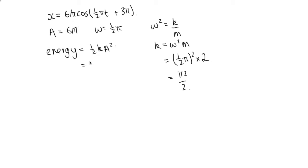And so the energy is equal to 1 half pi squared on 2 times a squared, which is 6 squared on pi squared. So these pi's cancel each other out. And we end up with 36 on 4. And so that is equal to 9 joules.